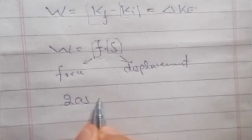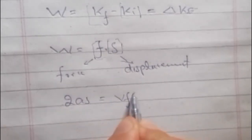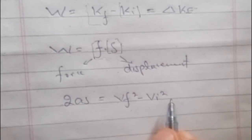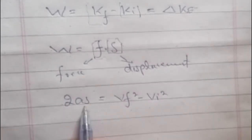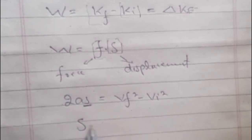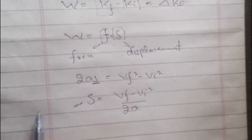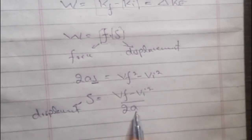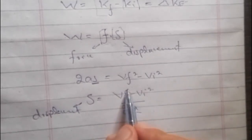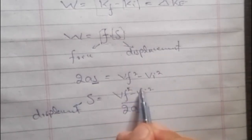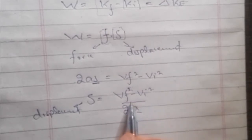According to the third equation of motion, 2as = vf² - vi². Solving this equation for displacement s: s = (vf² - vi²) / 2a, where s is the distance or displacement, a is the acceleration, vf is the final velocity, and vi is the initial velocity.